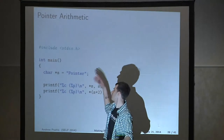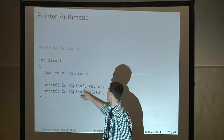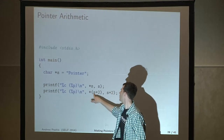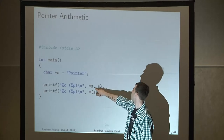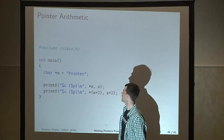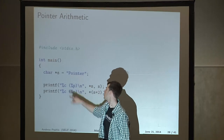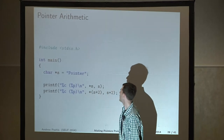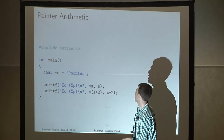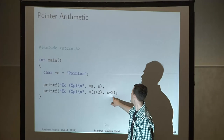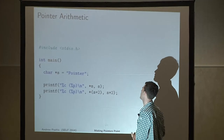Say you make a string called pointer as before. Here I have two print functions. This one is printing out a character followed by the pointer value — I'm dereferencing S. Since S is the pointer to the first character in the string, it will undoubtedly return the capital P. However, the next one I'm doing the same thing but adding two to the pointer value.